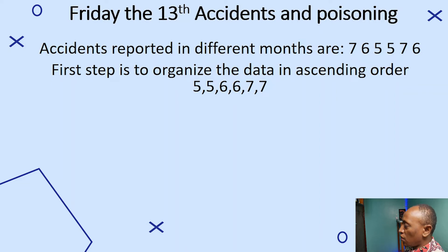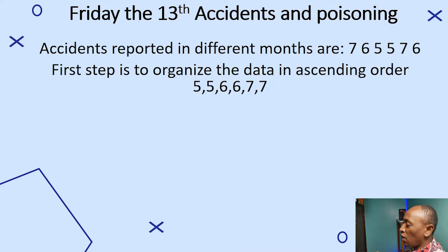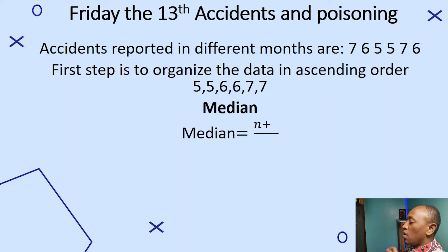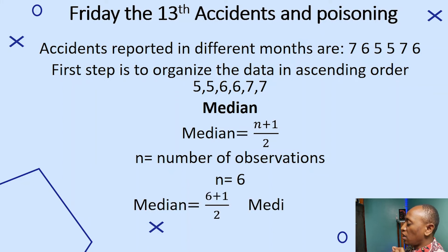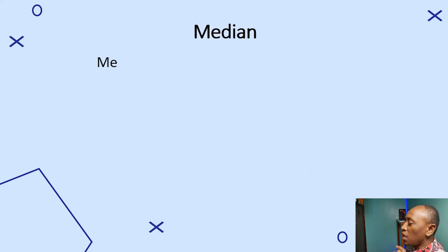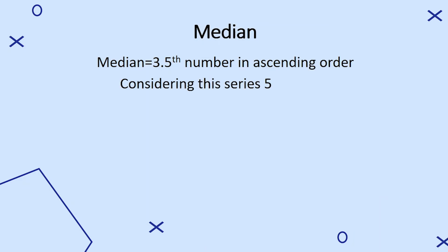Now let's calculate the median for Friday the 13th accidents and poisoning. The accidents reported in different months are 7, 6, 5, 5, 7, and 6. Organizing in ascending order: 5, 5, 6, 6, 7, 7. The median position is (6 + 1) / 2 = 3.5, so the 3.5th number is between 6 and 6.